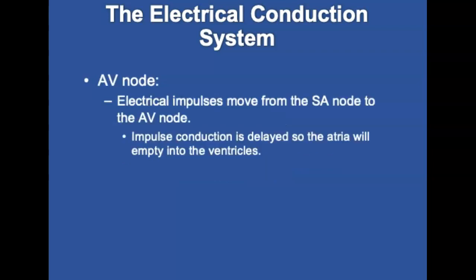The AV node is a group of cells located in the floor of the right atrium between the tricuspid valve near the opening of the coronary sinus. When the impulse from the SA node enters the AV node, it is delayed for about 0.12 seconds before being relayed through the rest of the conduction system. This allows the atria to empty blood into the ventricles.